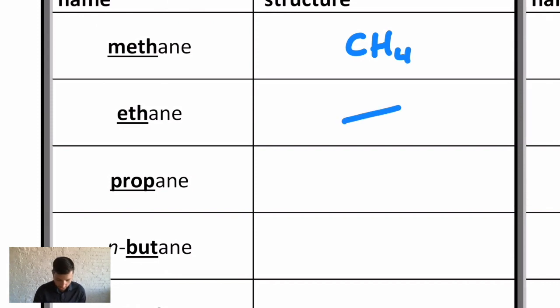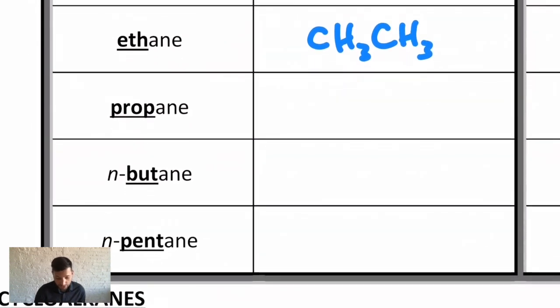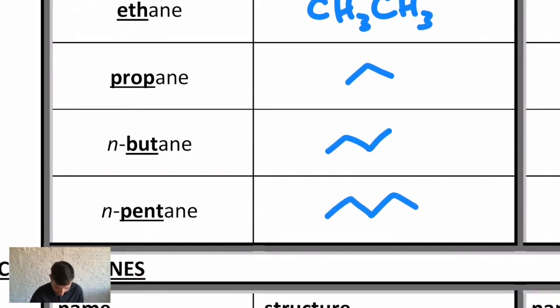Then you can certainly do a nice line structure for propane—there's three carbons. Butane, there's four. Pentane, there's five.